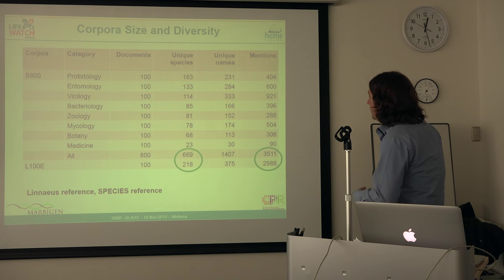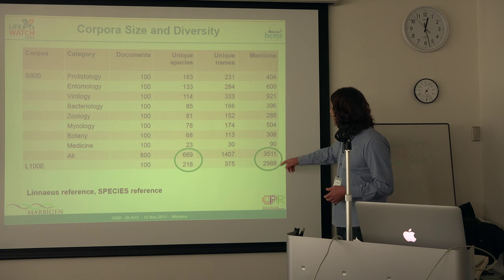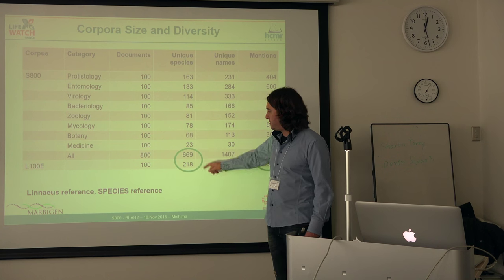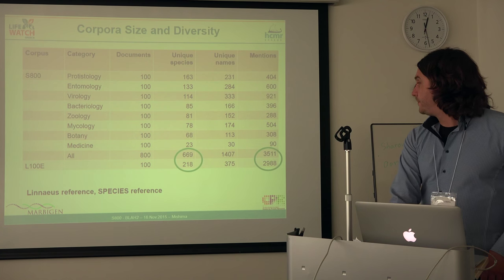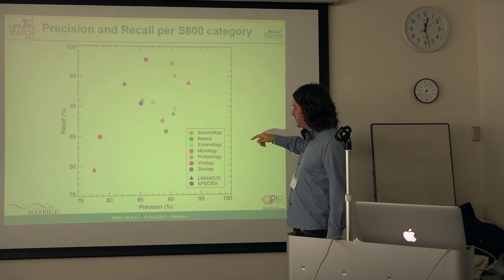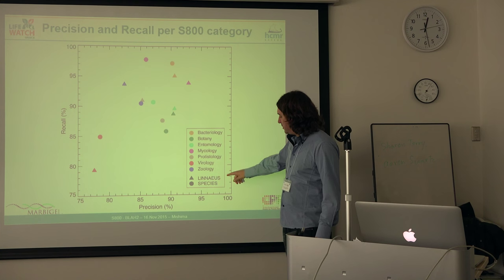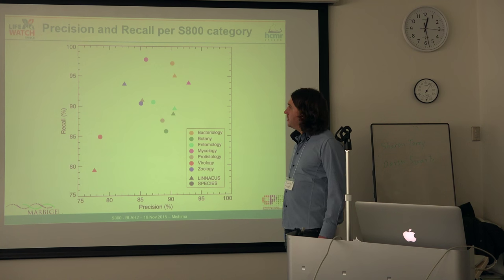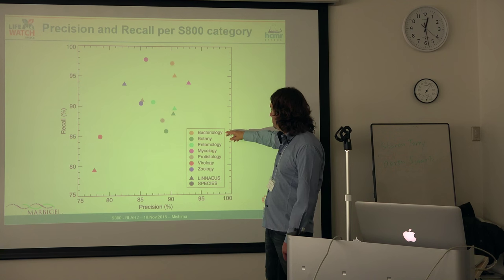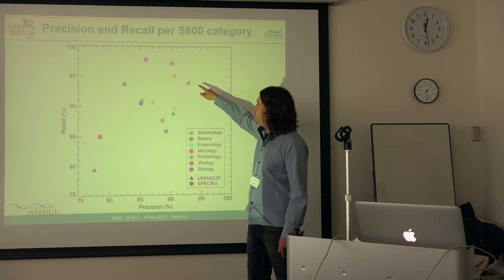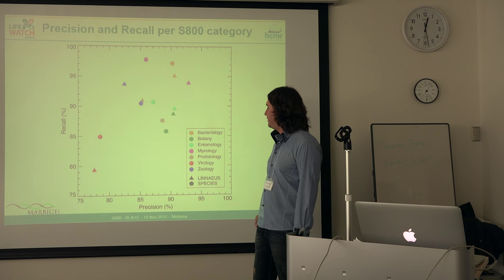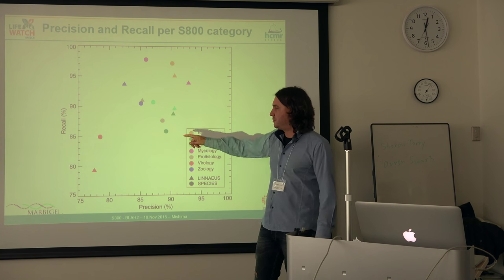In comparison to the Linnaeus corpus, with roughly the same curation effort and similar number of annotations, we had three times as many unique species. Here is a graph showing the precision and recall for each category — so for abstracts from different genres. Both the Linnaeus tagger and the species tagger have similar performance, but you can observe that for fields like bacteriology or mycology, where researchers tend to use Linnaean binomials, species name recognition performs better — as opposed to, for example, biology, which is the worst case.